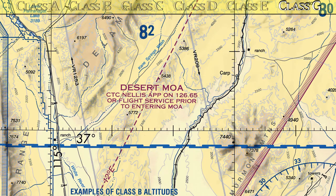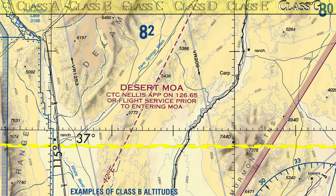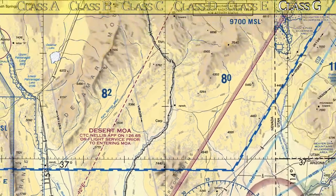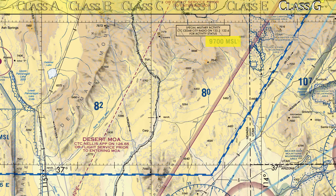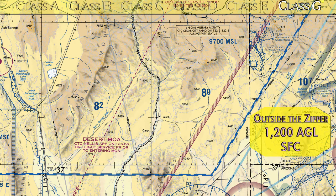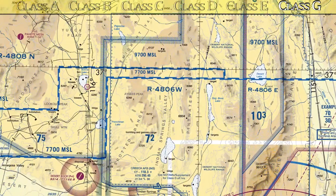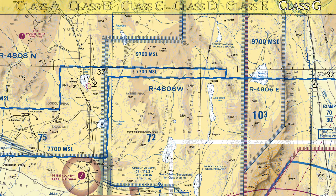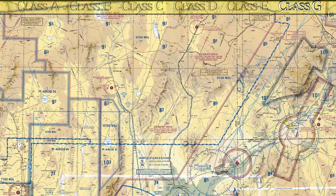The last thing to mention is the zipper. The zipper also represents class G airspace and how high it goes. Looking at one example, it shows class G goes up to 9,700 feet MSL. Further down you'll see it change — there's a section where class G goes surface to 7,700 feet MSL, and then 9,700 feet on the top side. So there are a couple of special G airspaces, and we've now covered them all.